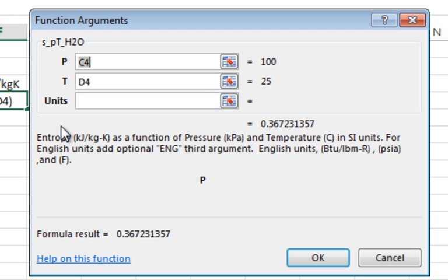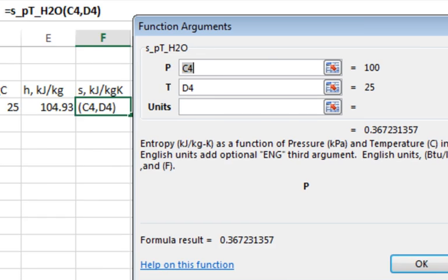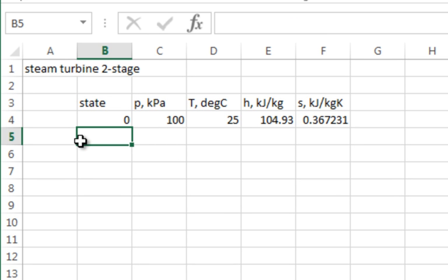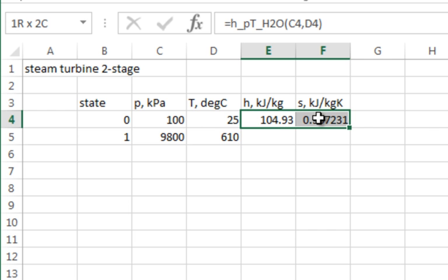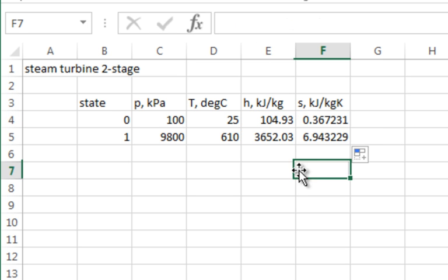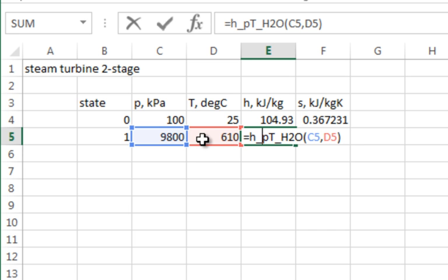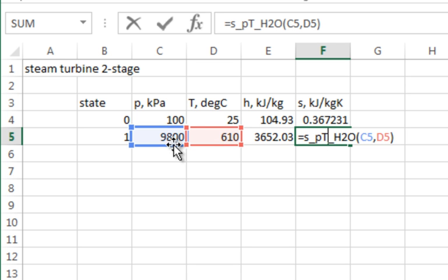So for our first state, 9,800, and a temperature of 610, right? One of the things in Excel is, if I want to just replicate that formula, I can grab this box, drag it down, and there you go. And this enthalpy is evaluated at the temperature and pressure for that line, and this entropy is evaluated at the temperature and pressure for that line.